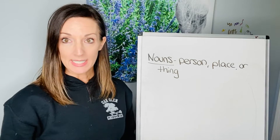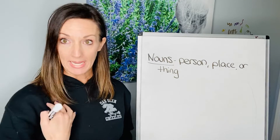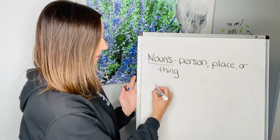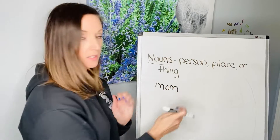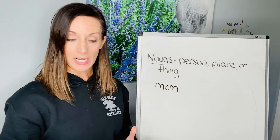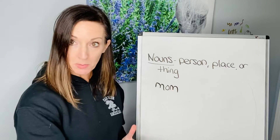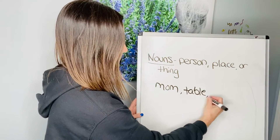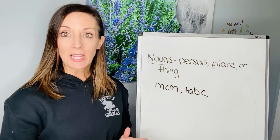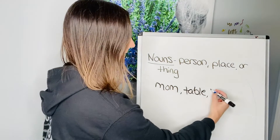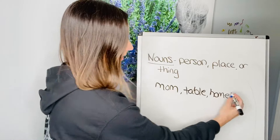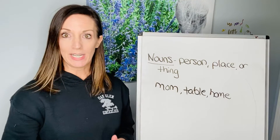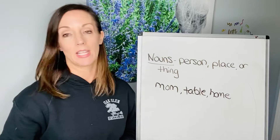I'm going to give you some examples. Right now, me — I'm a person. So a noun for me would be a mom, right? I'm a mom. Another noun for right now that I see is a table in front of me. And I am in my home, so that's another noun. So I have the person, a thing, and a place right now. And those are three nouns that I can name right now.